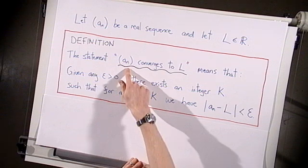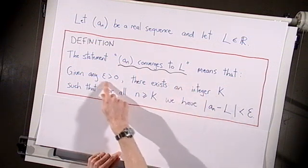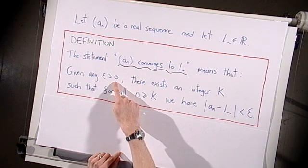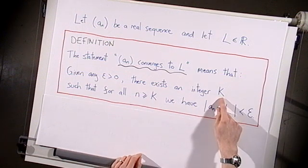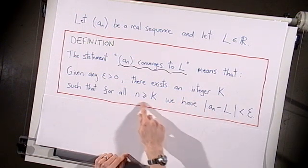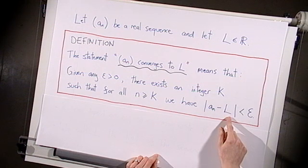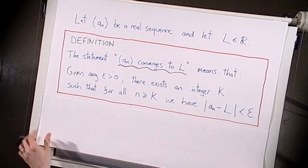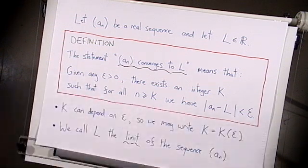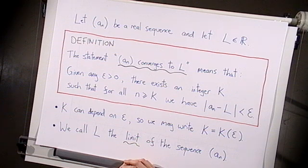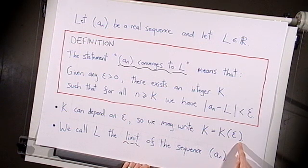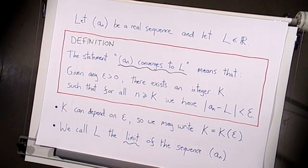We're saying that the sequence a_n converges to l if, given any positive number epsilon — however small epsilon is chosen — we can find a large integer k, such that from the kth term onwards, the distance between the terms of the sequence and the number l is less than epsilon. One thing to note is that this integer k is allowed to depend on epsilon, and to emphasise this, we might write k as a function of epsilon. We call the number l, to which the sequence converges, the limit of the sequence.